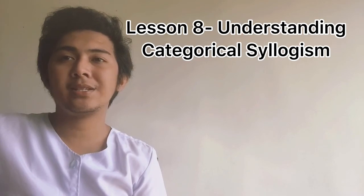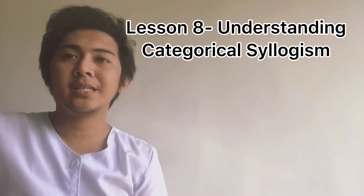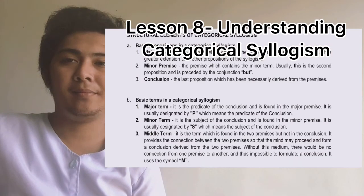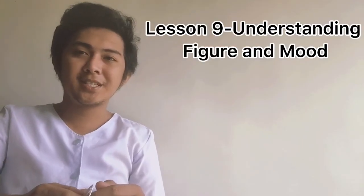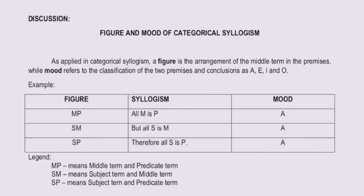Let's go now to Lesson 8: understanding categorical syllogism and its structural elements. For Lesson 9, it is understanding figure and mood — specifically the figure and mood of categorical syllogism. A figure is the arrangement of the middle term in the premises, while mood refers to the classification of the two premises and conclusion as A, E, I, and O. An example is provided.